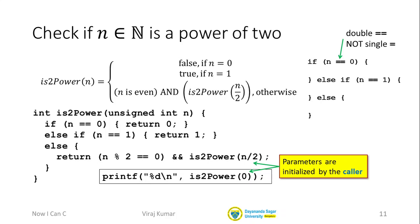Similarly, if we've reached the recursive call, which calls is2power with some value n over 2, then in the recursive call the parameter n will be set to whatever the expression n over 2 evaluates to. I'm making this point because many students feel that if they have a parameter n, they have to set its value inside the function. This is not true — the value is set by whoever is calling your function. If main calls your function with argument 7, then the parameter n will be set to 7.